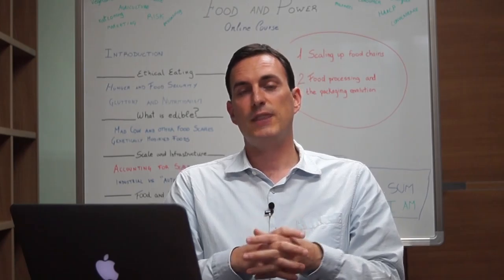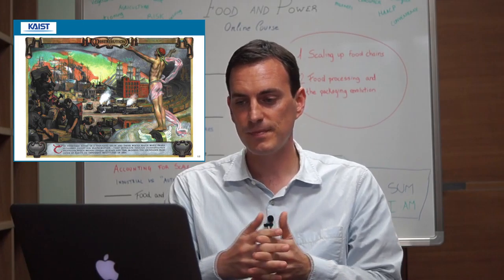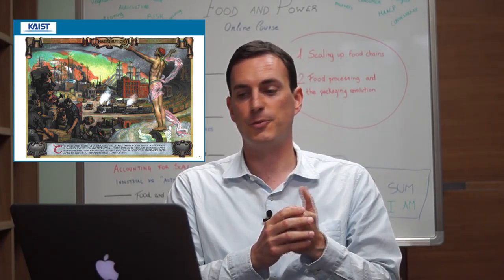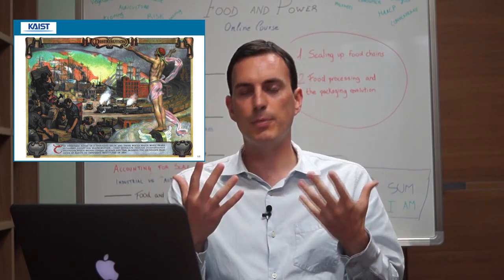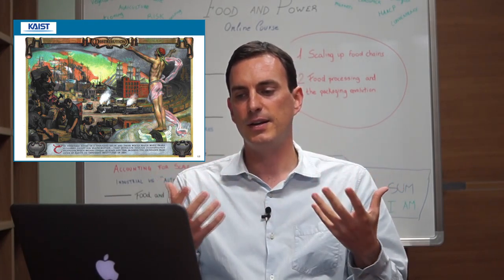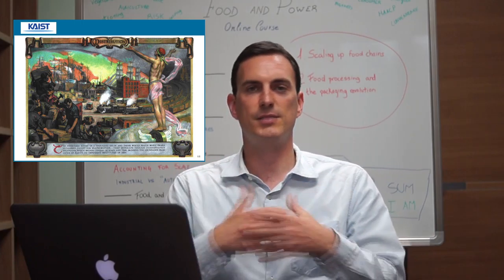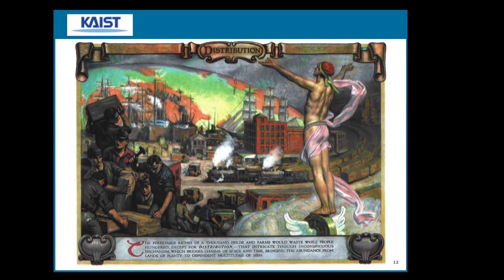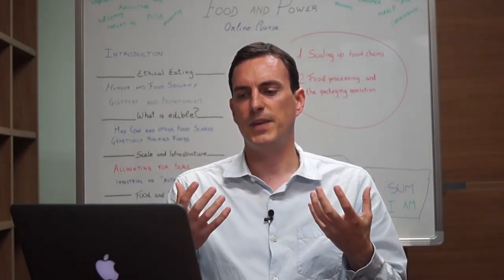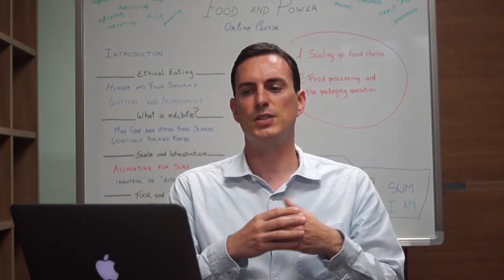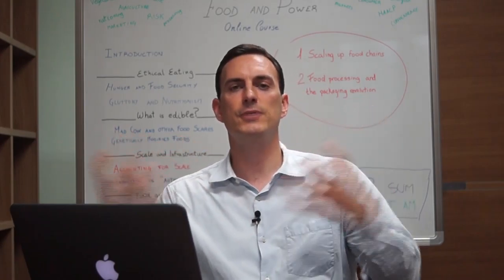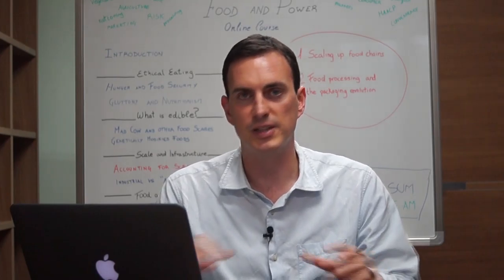With these expanded markets, farmers around Chicago were now competing with farmers in New York, with dramatic consequences for the food supply. This gave rise to a new distribution industry. Images from Armour & Company pamphlets published just after World War I celebrate their innovations in moving food across the nation. As they wrote: 'the perishable riches of a thousand fields and farms would waste while people hungered except for distribution — that intricate though inconspicuous mechanism which bridges chasms of space and time, bringing abundance from lands of plenty to dependent multitudes.'